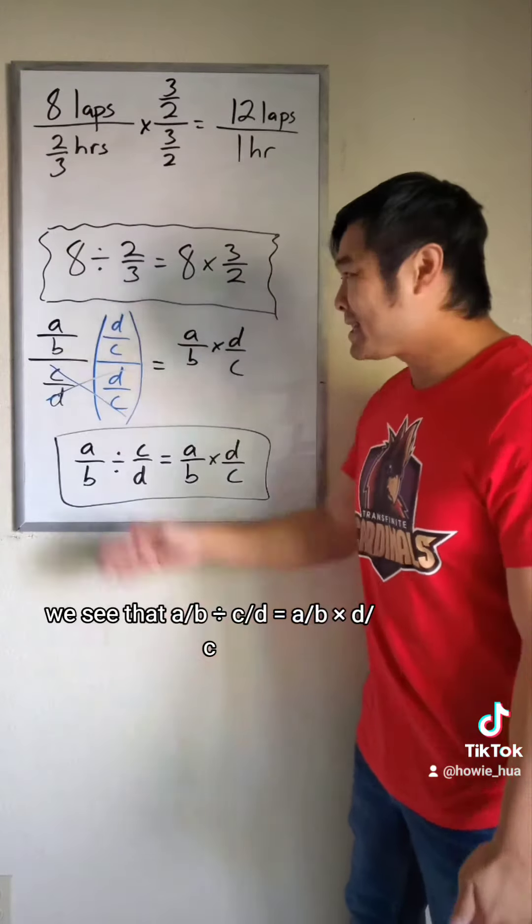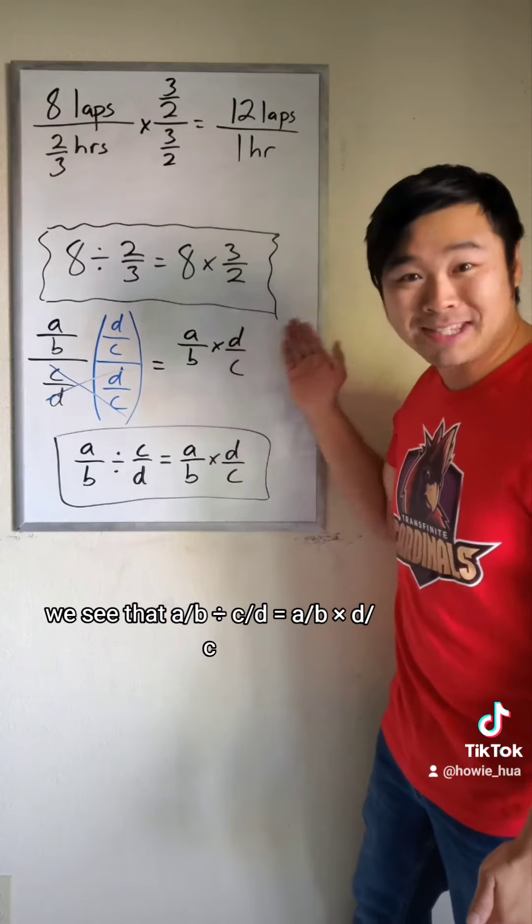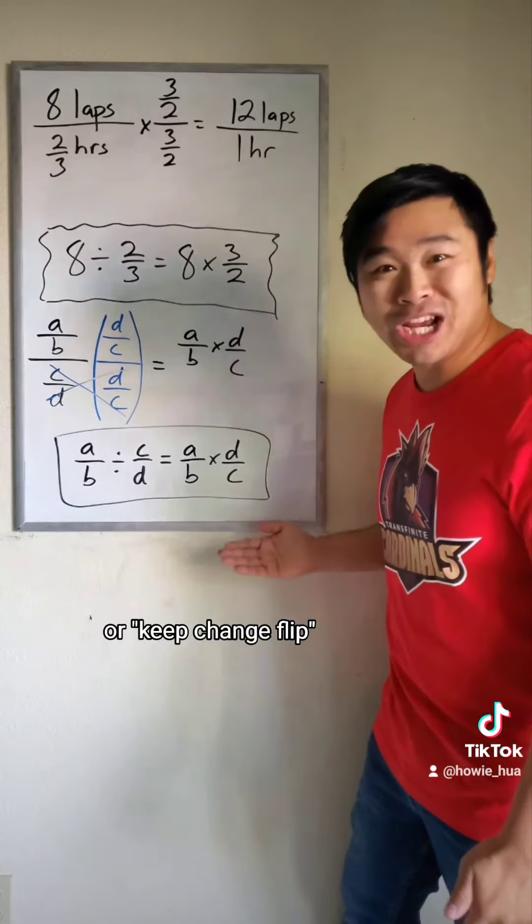And when we do that, we see that a over b divided by c over d equals a over b times d over c, or keep change flip.